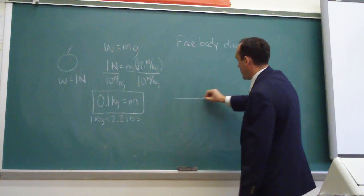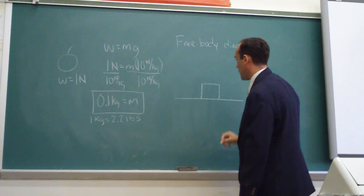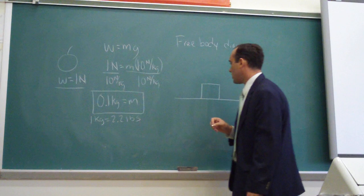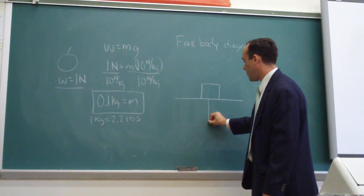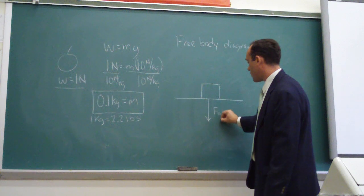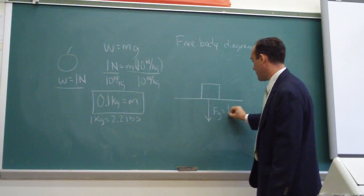We have an object, which is the apple, sitting on a surface. We know from the beginning information that we have a weight force associated with this, and that weight force points down. We represent that as Fg, or force of gravity, and that is equal to one newton.